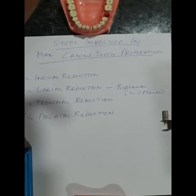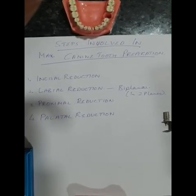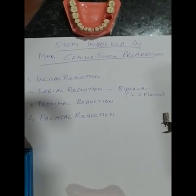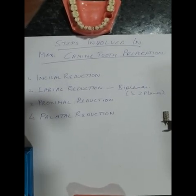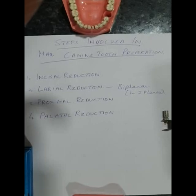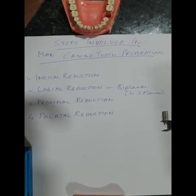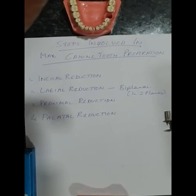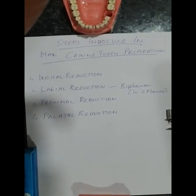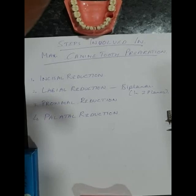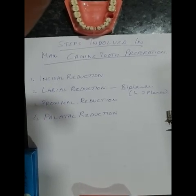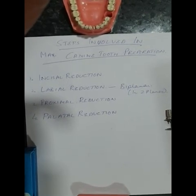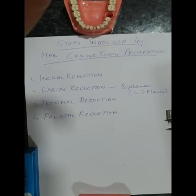Once you have completed the labial reduction, then comes the proximal reduction. For proximal reduction, you use a long needle bur or a contact breaking bur to remove all the proximal contact areas and break contact with the adjacent teeth. You should always try to leave a lip of enamel in contact with the adjacent teeth while doing reduction with this long needle bur. Once you have achieved the separation, there will just be a thin lip of enamel touching the adjacent tooth.